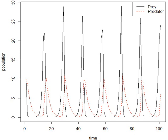The Lotka-Volterra system of equations is an example of a Kolmogorov model, which is a more general framework that can model the dynamics of ecological systems with predator-prey interactions, competition, disease, and mutualism.